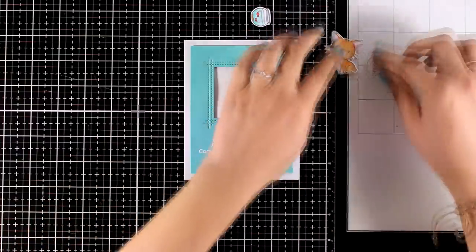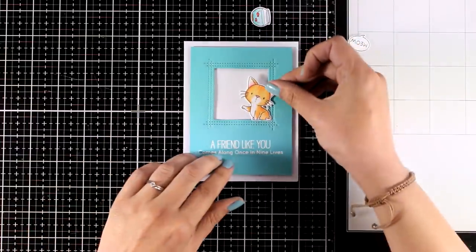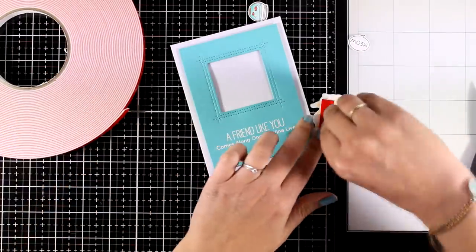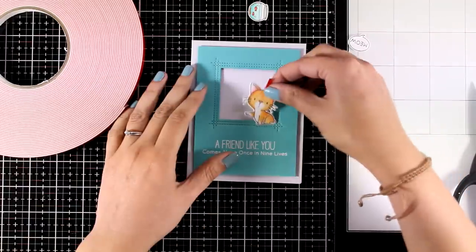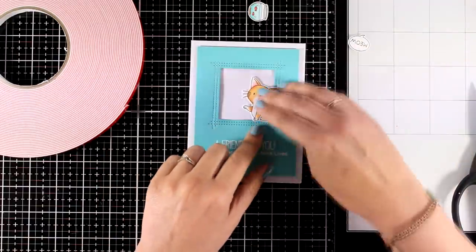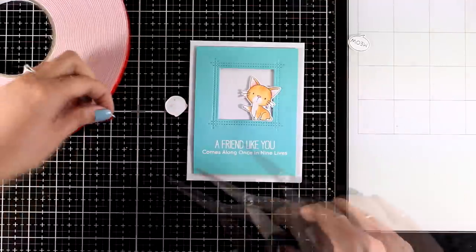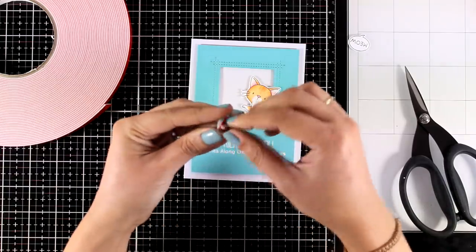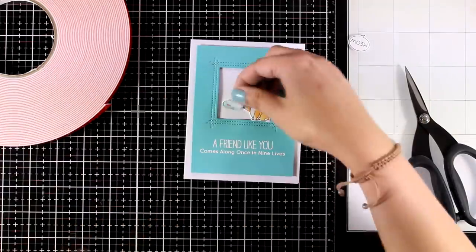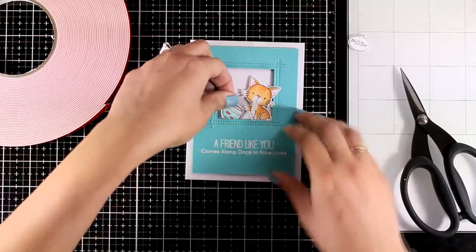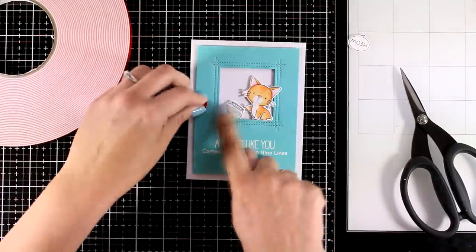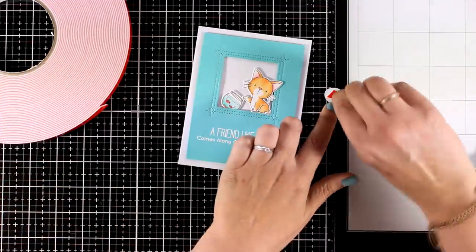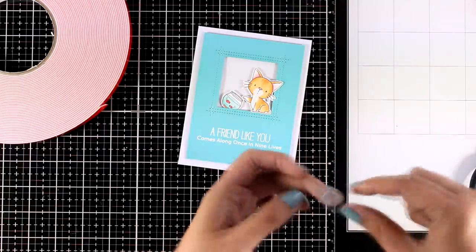I used foam tape at the back of my panel to add some dimension and I placed this panel on top of a pre-folded card that is four and a quarter by five and a half. Now I am going to create my little scene inside that window. I am going to place the cat first and then I am going to add the bowl again with foam tape at the back for dimension. But the bowl is not going to go straight, I am going to tilt it a little bit as if the cat is being naughty.